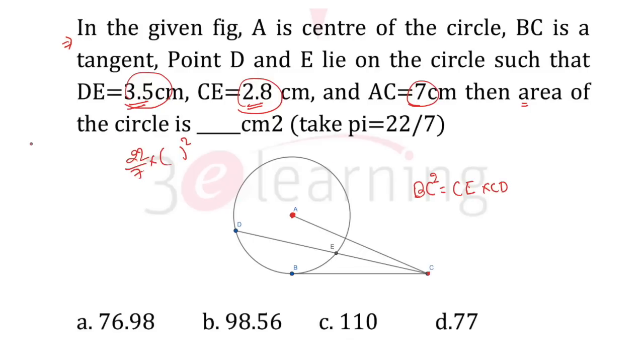Here the values are 2.8, 3.5, and 7. Why not take 0.7 common from everyone? So I am taking 0.7 out. This one is 5, this one is 4, and this one is 10. I'll include 0.7 after that.